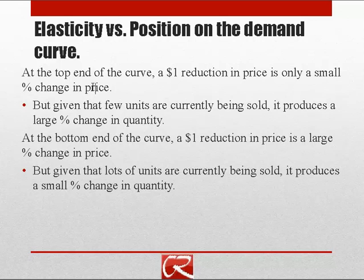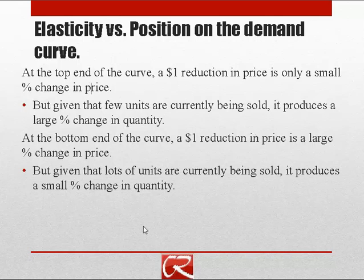If you work through those examples you'll get some actual numbers, and those numbers should indicate that at the top end of the curve, a $1 price change is only a small percentage change in price but it's going to produce a very large change in quantity. At the bottom end of the demand curve, when prices are already low, a $1 reduction in price is a really large percentage change in price, but given that we have lots of units already being sold, even if we gain the same number of units from the $1 price reduction it's a smaller percentage change in quantity.